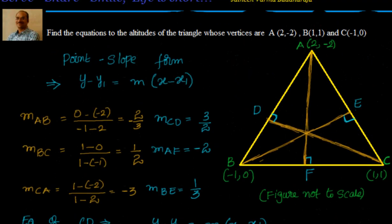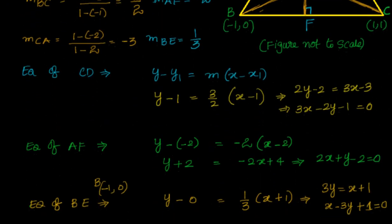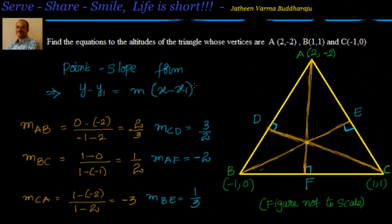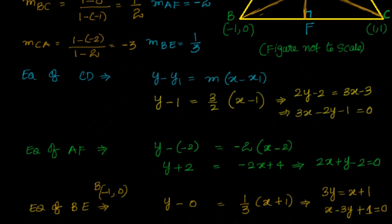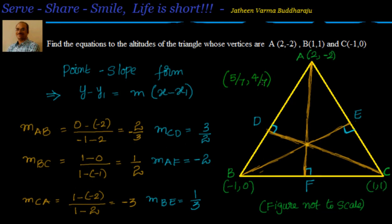These are the three equations of the altitudes of the triangle. To find the orthocenter — the point of concurrency of the altitudes — take any two of these three equations, solve them for x and y, then substitute into the third equation for verification. The orthocenter should come out to x equals 5/7 and y equals 4/7.